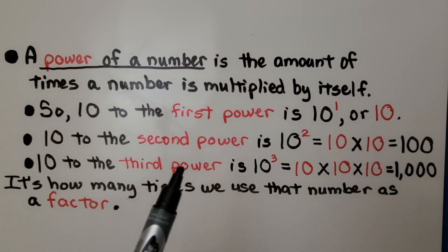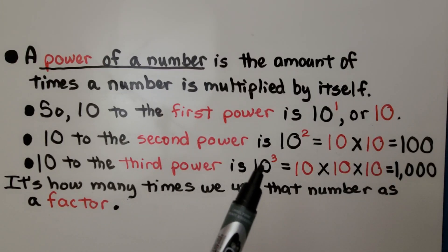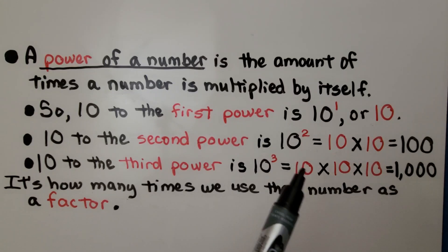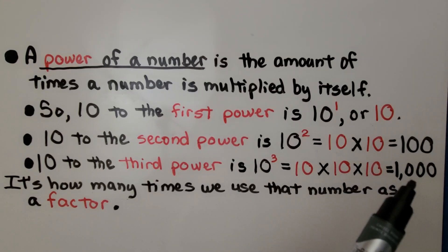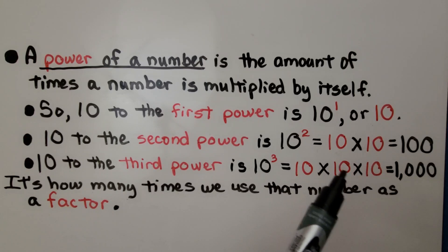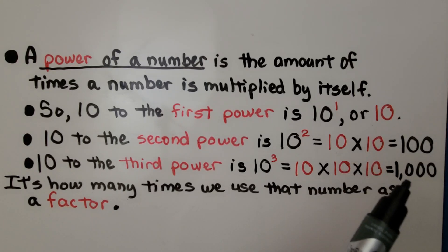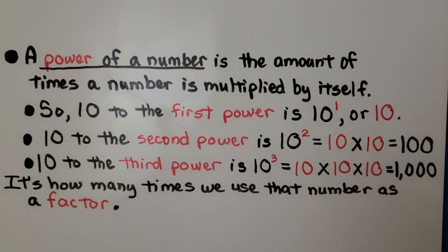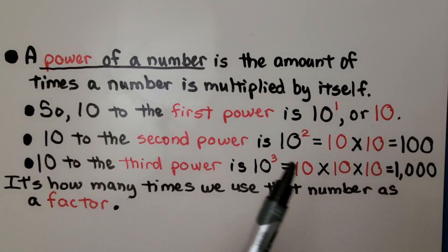And 10 to the third power — now we have 3 of them. We have 10 times 10 times 10, which is 1,000, because 10 times 10 is 100, and 100 times 10 is 1,000. It's how many times we use that number as a factor — we're going to use 10 as a factor 3 times because there's a little 3 exponent.